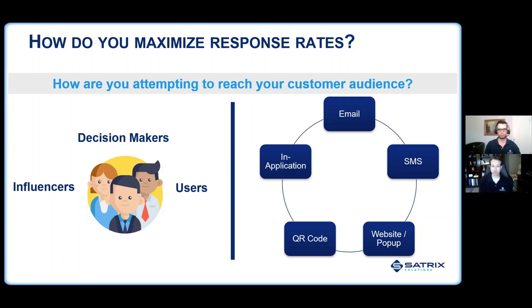Let's jump in and start with the type of distribution: survey emails. Despite all the emerging technology and shifting landscapes, email is still probably the most effective way of getting your survey out there. Some things that work really well are good from lines — are you using your CEO's name or somebody recognizable amongst your customers, or are you using a generic do-not-reply? Who you have on that from line does make a difference, and if it's somebody recognizable, your open rates tend to increase.